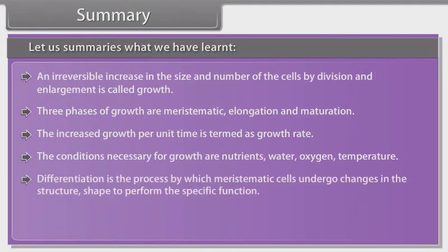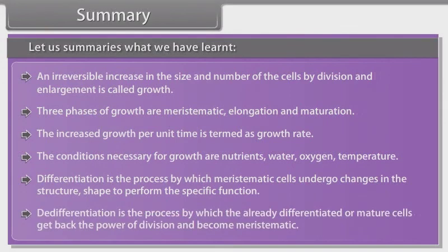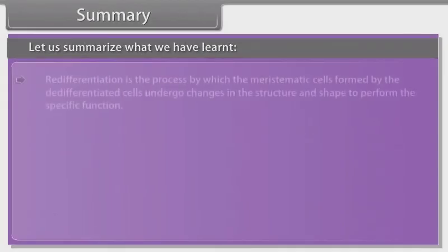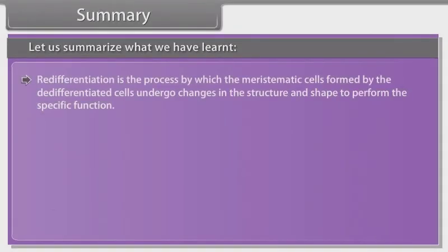Differentiation is the process by which meristematic cells undergo changes in the structure, shape to perform the specific function. Dedifferentiation is the process by which the already differentiated or mature cells get back the power of division and become meristematic. Redifferentiation is the process by which the meristematic cells formed by the dedifferentiated cells undergo changes in the structure and shape to perform the specific function.